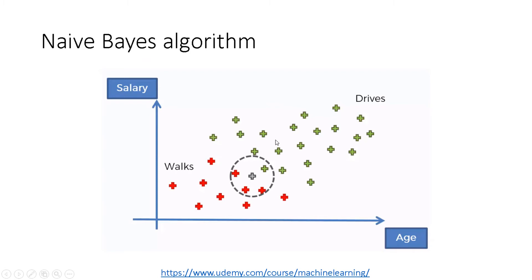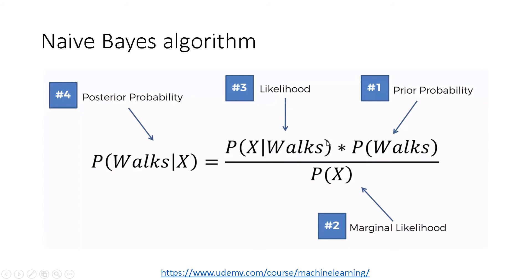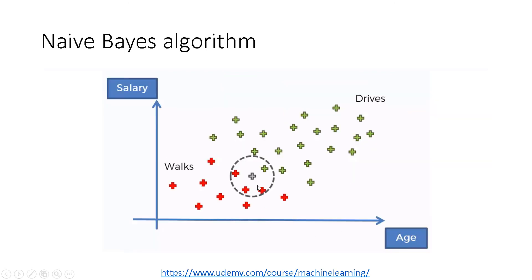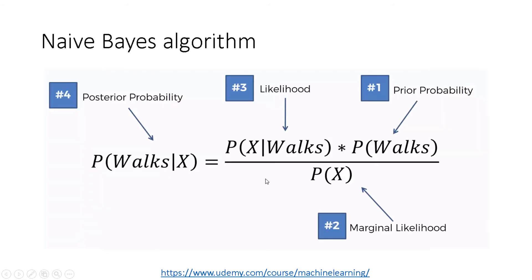We are going to use Naive Bayes to solve it, following these steps. This is the Bayes theorem we just talked about. In the first step we are trying to solve: what is the probability of a person walking, given that the person has these features X — say a salary of 30,000 and an age of 25? The first part to calculate is the prior probability, which is the probability of walking.